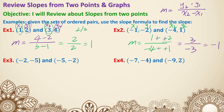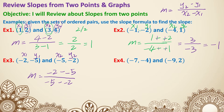Pause here and try examples 3 and 4. For example 3, label the points x1, y1, x2, y2. So it's y2 minus y1, which is negative 2 minus negative 5. On the bottom is x2 minus x1, so it's negative 5 minus negative 2. You're subtracting a negative number — you've got to make sure you have both signs. Two negative signs change to addition, so it's negative 2 plus 5, which is positive 3. On the bottom, negative 5 plus 2 is negative 3. 3 over negative 3 is negative 1.